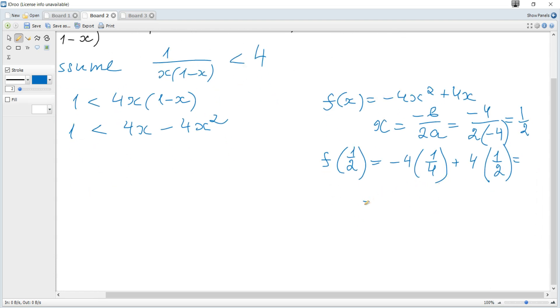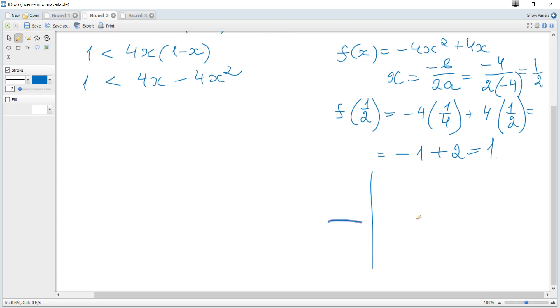This equals -1 + 2 = 1, so the vertex is at (1/2, 1), and it's a concave down parabola.